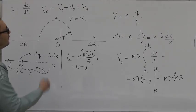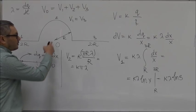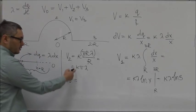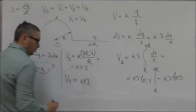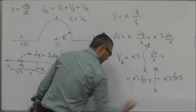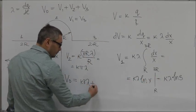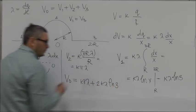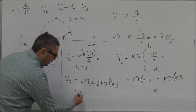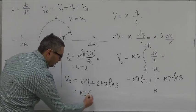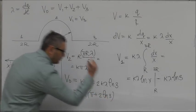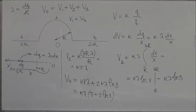The total electric potential at point O is the sum: V2 plus twice V1, since V1 and V3 are equal. Taking k·lambda out as a common factor, you get k·lambda times (pi plus 2·ln(3)). This is the electric potential at point O.